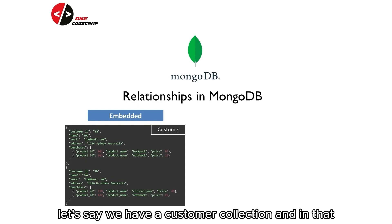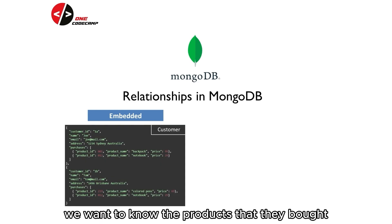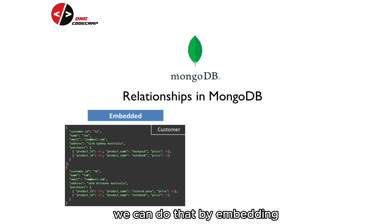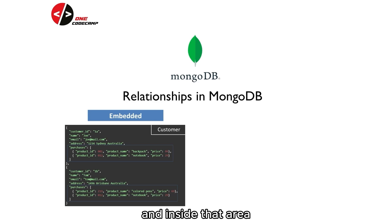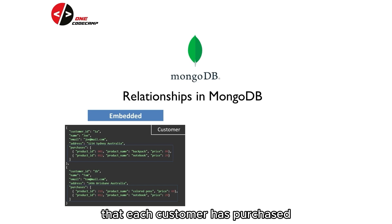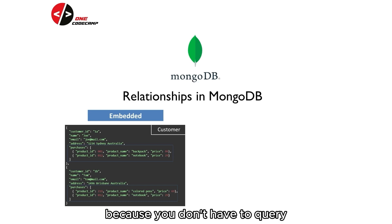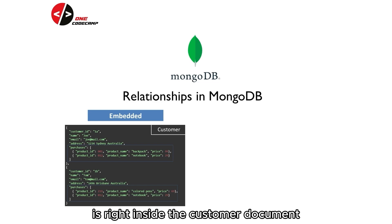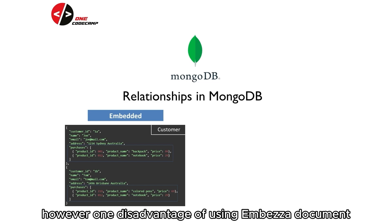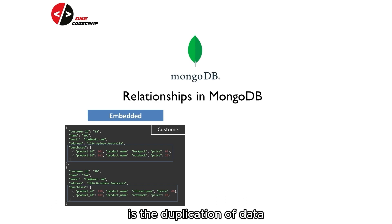First is Embedded Documents. Let's say we have a customer collection and we want to know the products that they bought. We can do that by embedding the product documents right inside the customer document. We have an array of orders field, or purchases — we can call it whatever we want. Inside that array, we specify the products that each customer has purchased. Using Embedded Documents is useful because you don't have to query multiple documents to get the desired output, since everything is right inside the customer document.